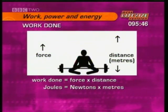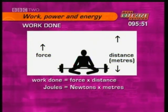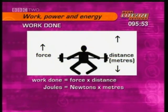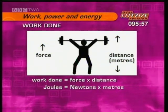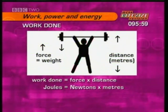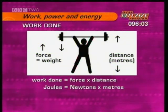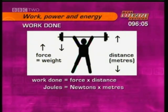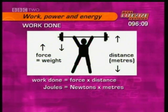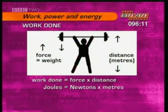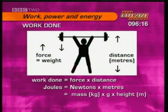When the weightlifter lifts the weight, he's using his muscles to transfer energy from the food into extra potential energy in the weights when they're off the ground. The force he uses is equal to the pull of gravity on the weights — that's the mass in kilograms times the gravitational field strength, g. The distance he moves the weights is the height lifted in metres. So the work the weightlifter does, the energy transferred, is equal to the mass of the weights times g times the height lifted.